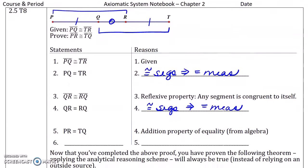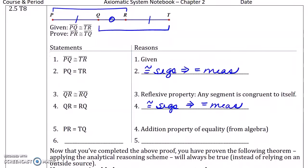Now, if we combine PQ and QR, we get PR. We combine TR and RQ, we get TQ. Therefore, those measures are equal. So that would just be arithmetic, or the addition property of equality.